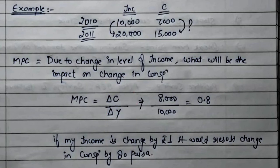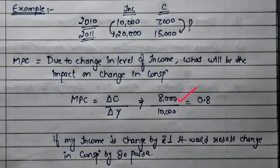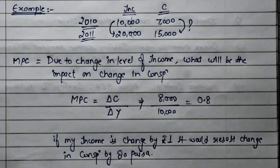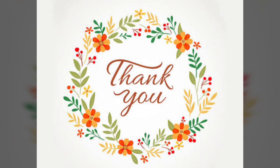Change in income is ₹20,000 minus ₹10,000, which equals ₹10,000. Change in consumption is ₹15,000 minus ₹7,000, which equals ₹8,000. So MPC equals ΔC upon ΔY, that is 8,000 divided by 10,000, equal to 0.8. This means if income changes by ₹1, consumption changes by 80 paise. I hope it's clear, thank you.